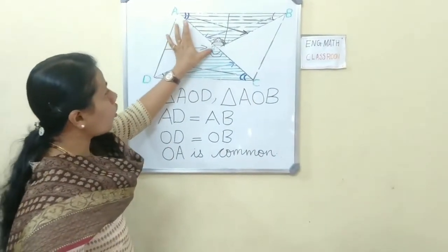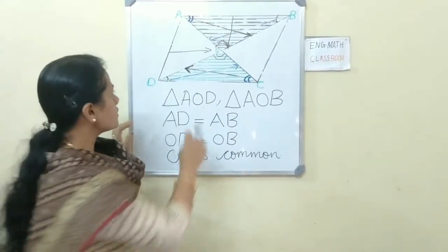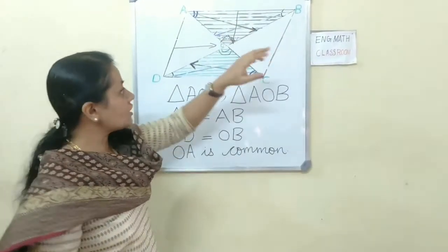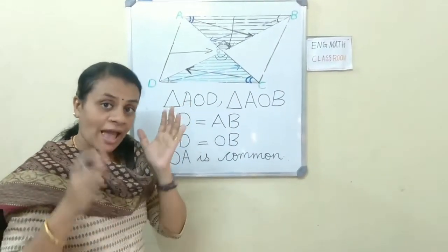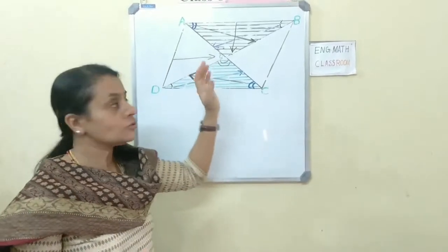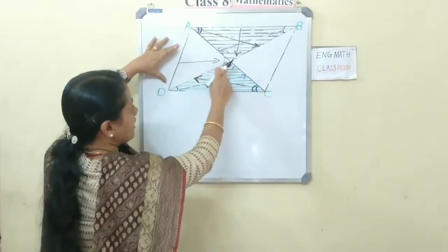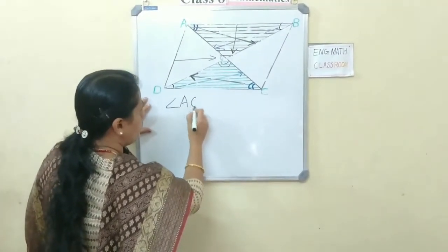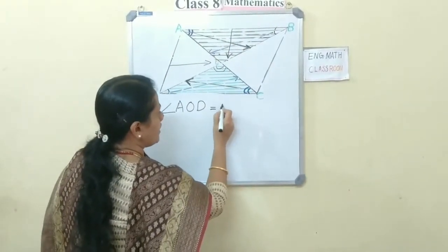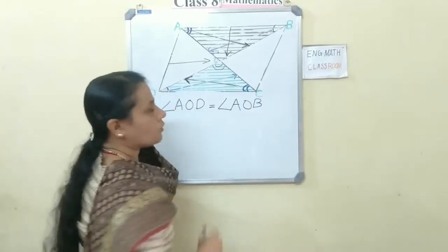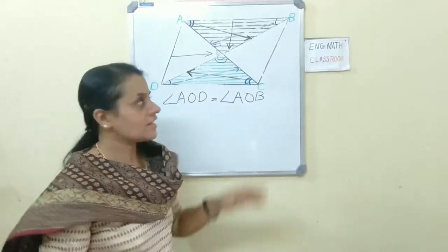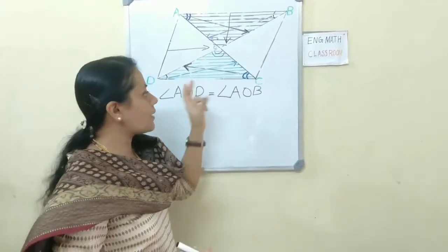Also, OA is the common side of these two triangles. It shows three sides of triangle ODA are equal to three sides of triangle OAB. So by SSS, the triangles are congruent. Angles opposite to equal sides are equal. Since AD and AB are equal, the angles opposite to these sides — angle AOD and angle AOB — are equal. Similarly, the other two triangles are also equal, so all four triangles in this parallelogram are congruent.